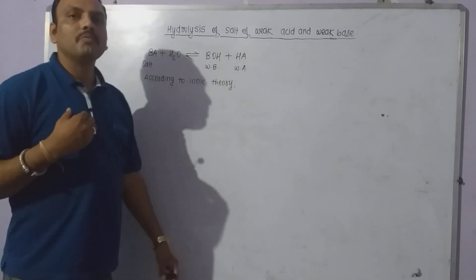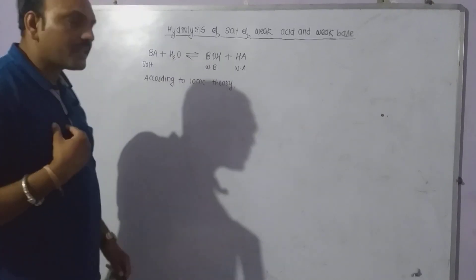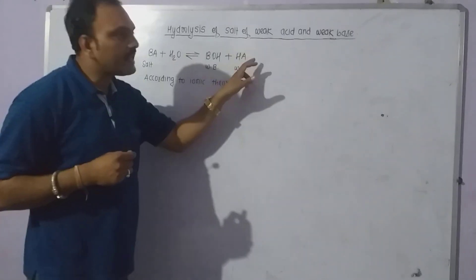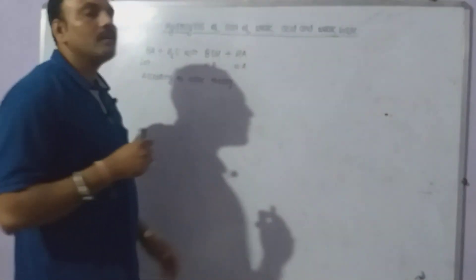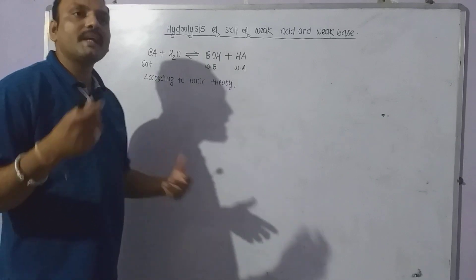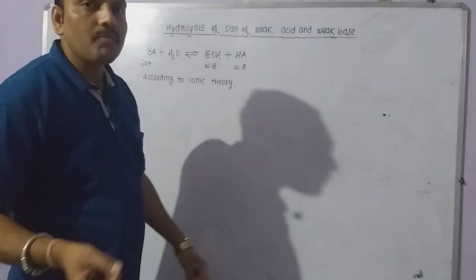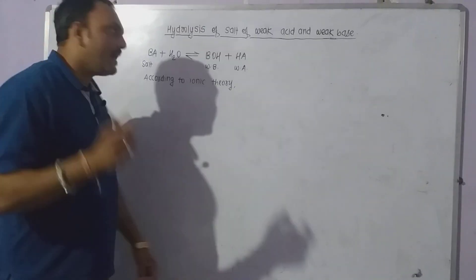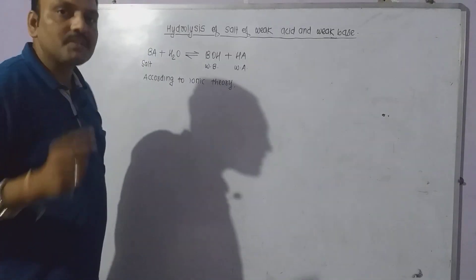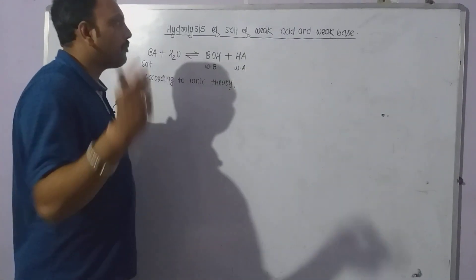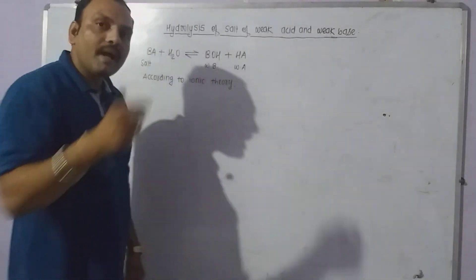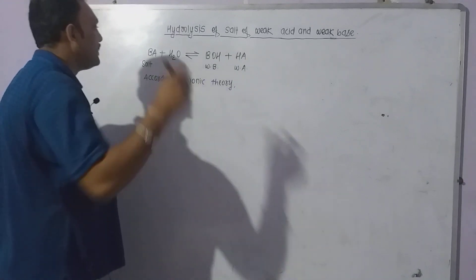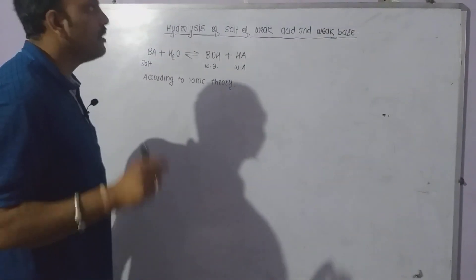Hello everybody. Today we are going to discuss hydrolysis of salt of weak acid and weak base. When salt of weak acid and weak base is dissolved in water, hydrolysis takes place. Let BA be the salt of weak acid HA and weak base BOH.